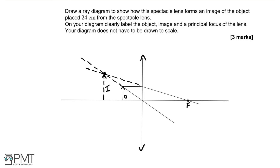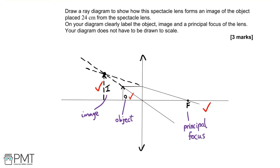In terms of marks: the first mark is for drawing one of those rays correctly; the second mark is for correctly drawing both rays and the image; and the third mark is for labeling the image, the object, and one principal focus — labeled as I, O, and F. So three marks there.